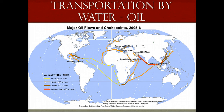Choke points are narrow channels along widely used global sea routes, some so narrow that restrictions are placed on the sizes of the vessels that can navigate through them. World oil choke points for maritime transit of oil are a critical part of global energy security. In 2011, total world oil production amounted to approximately 87 million barrels per day, and over one half was moved by tankers on fixed maritime routes. By volume of oil transit, the Strait of Hormuz, leading out of the Persian Gulf, and the Strait of Malacca, linking the Indian and Pacific Oceans, are two of the world's most strategic choke points. The international energy market is dependent upon reliable transport. The blockage of a choke point, even temporarily, can lead to substantial increases in total energy costs.